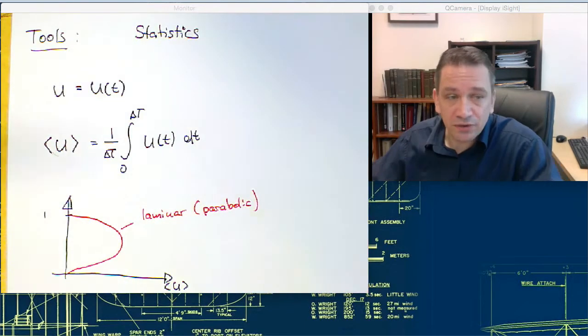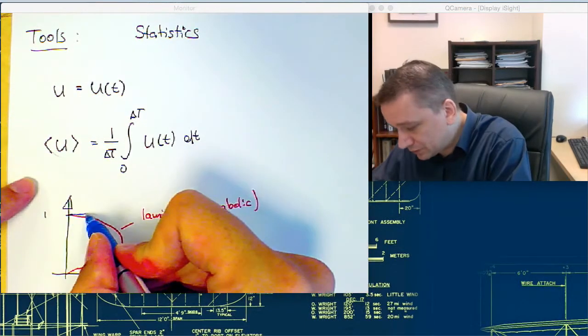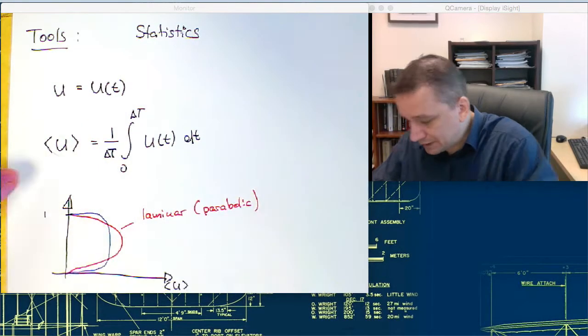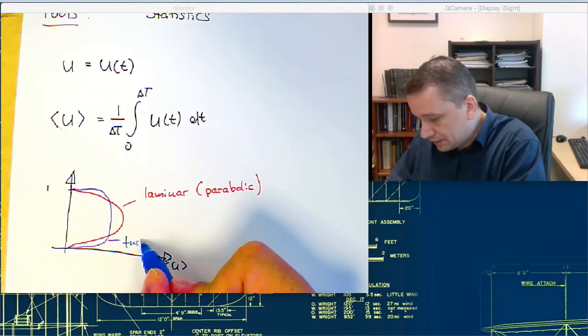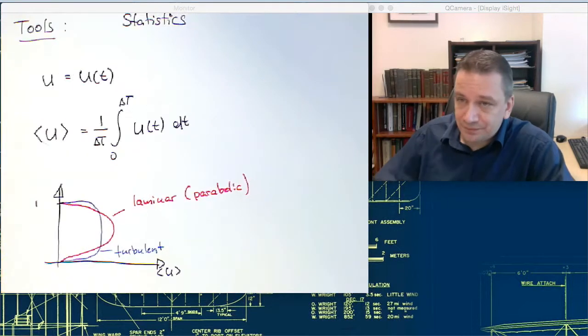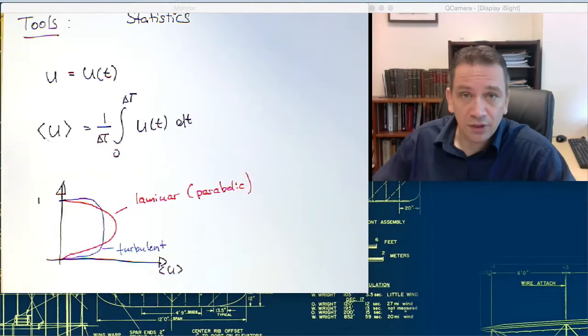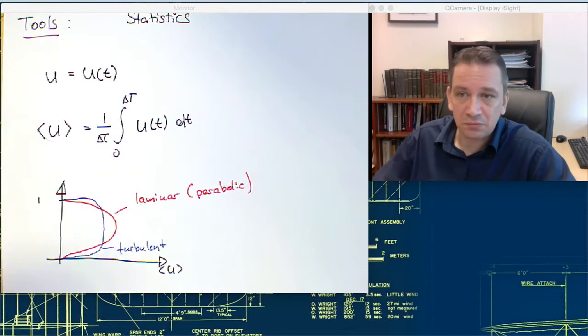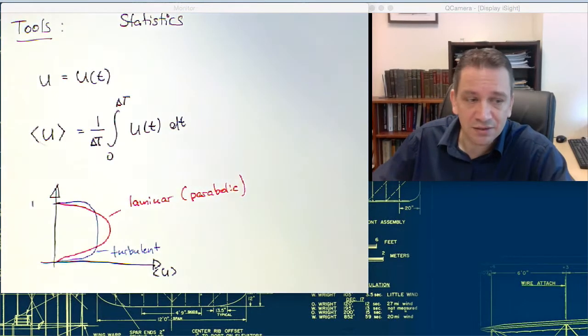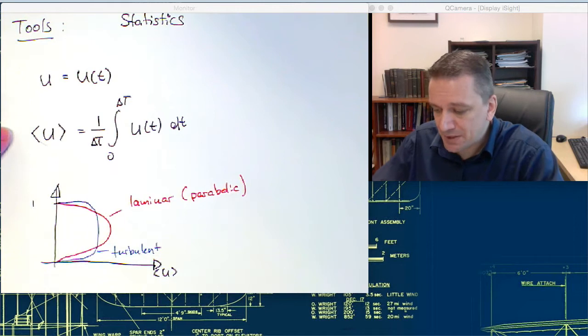If you now time average everything, you would get a flow field that more looks like this. It's a bit more round shapes. So that gives you already quite a bit of information on the flow fields and it's actually something that is used quite frequently.